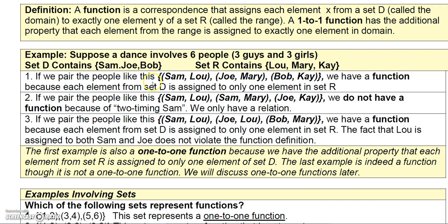Now if we paired Sam with Lou and Sam with Mary, and Joe with Kay, we would not have a function, because Sam — an element of the domain — is assigned to two different elements in the range: Sam is assigned to Lou and Sam is assigned to Mary. So we only have a relation here, not a function.